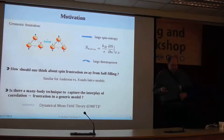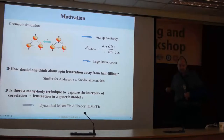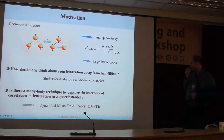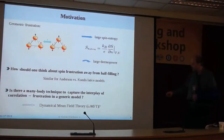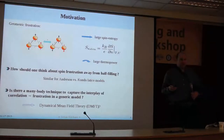So the question arises: how should one think about spin frustration in the Hubbard model away from half-filling? Similar questions would arise when going to the endosin lattice versus the Kagome lattice, where you can also have frustration and itinerance. More realistically, the question you can ask is: are there many-body techniques that can capture this interplay between correlation and frustration?